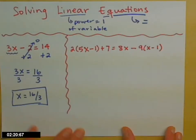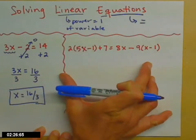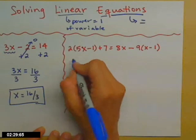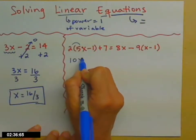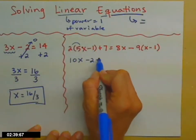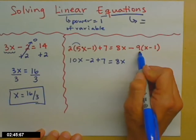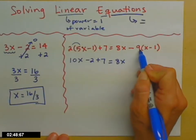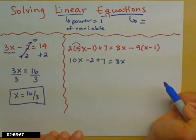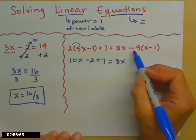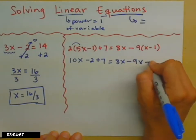Now let's look at that next example that looks a little more difficult, but isn't that bad. To start, we are going to clear parentheses by distributing. The 2 is multiplying everybody inside that first set of parentheses, so I'm going to get 10x minus 2 plus 7 equals 8x. The 8x and the minus 9 can't combine — one reason is the 9 doesn't have an x, and more importantly the 9 is attached with multiplication to that second set of parentheses, so I have to do that first. I'll distribute that minus 9: 9 times x gives minus 9x, and minus 9 times minus 1 makes that a plus 9.